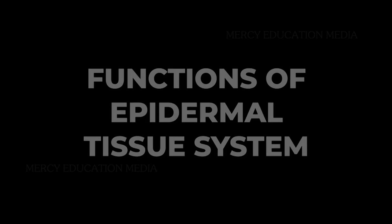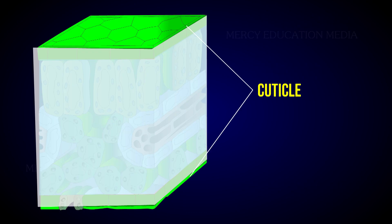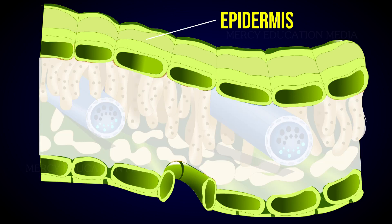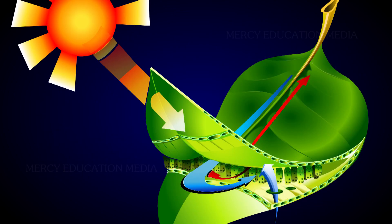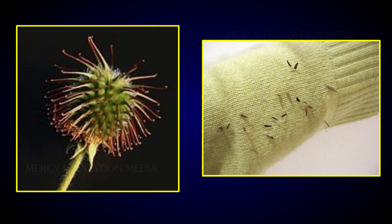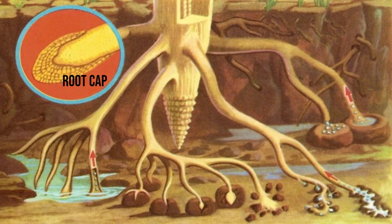The functions of the epidermal tissue system are as follows: this tissue system in the shoot checks excessive loss of water due to the presence of cuticle. Epidermis protects the underlying tissues. Stomata are involved in transpiration and gaseous exchange. Trichomes are also helpful in the dispersal of seeds and fruits. Root hairs absorb water and mineral salts from the soil.